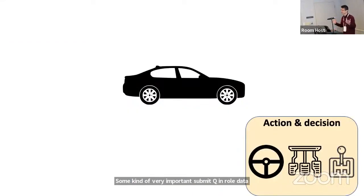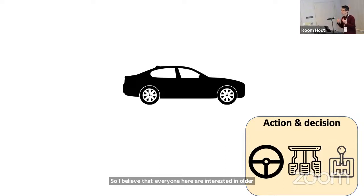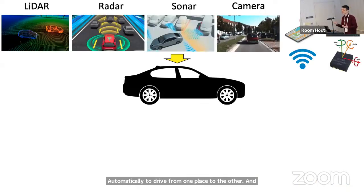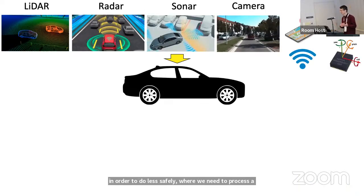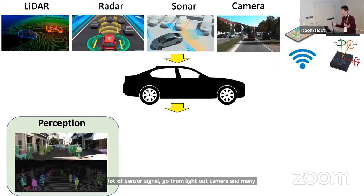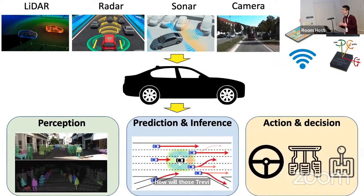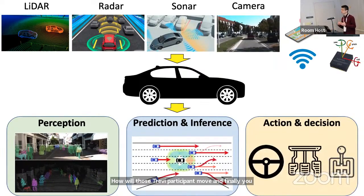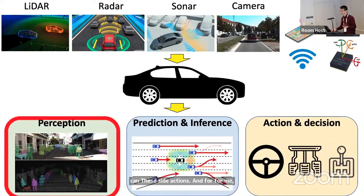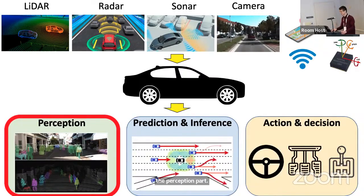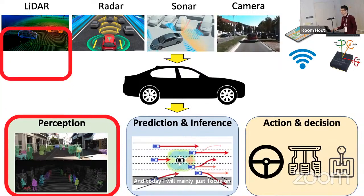Everyone here is interested in or expert in autonomous driving. The goal is to let a car decide its actions automatically to drive from one place to another. To do that safely, we need to process a lot of sensor signals from LIDAR, camera, and many others, so you can perceive the environment, know where objects are, how traffic participants will move, and decide actions. I mainly work on the perception part, and today I'll focus on perception using LIDAR signal.